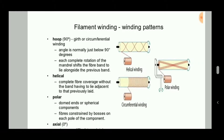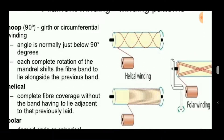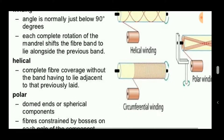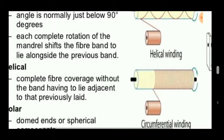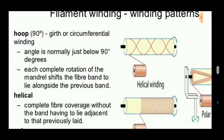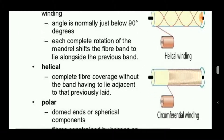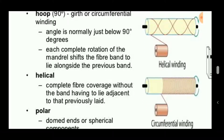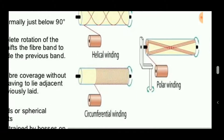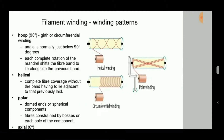These are the winding patterns. Hoop winding is a normal 90-degree rotation. Helical winding is curved, going one direction and then the opposite, providing complete fiber coverage without the band having to lie adjacent to the previous one. Polar winding goes end to end in one direction and then the opposite direction.